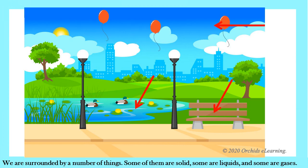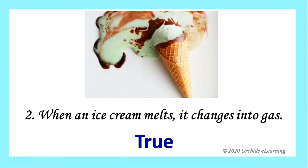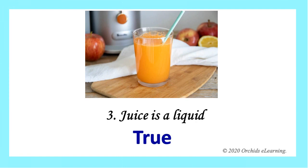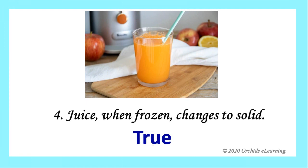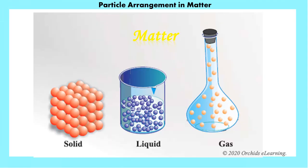Look at the pictures and statements below, and state whether the given statements are true or false. Ice cream is a solid — true. When the ice cream melts, it changes into a gas — false, it changes into a liquid. Juice is a liquid — true. Juice when frozen changes to solid — true. The balloon contains gas inside it — true.